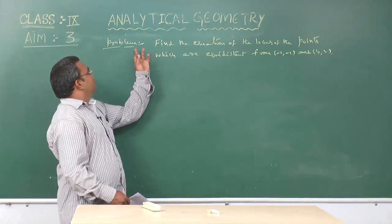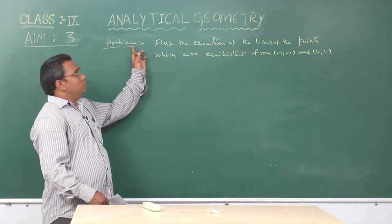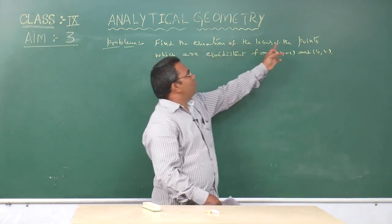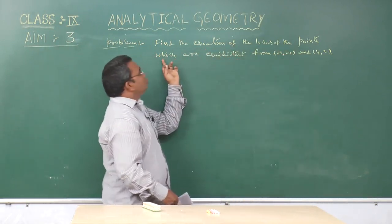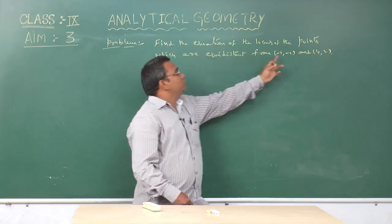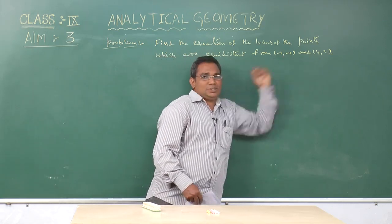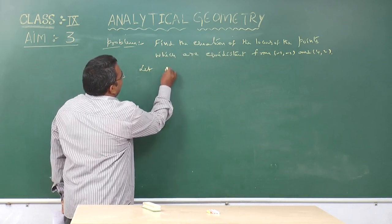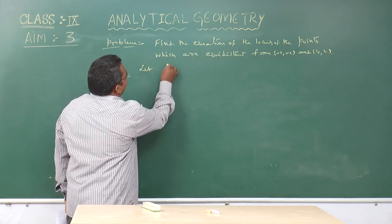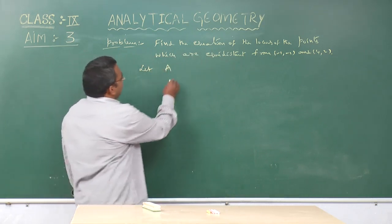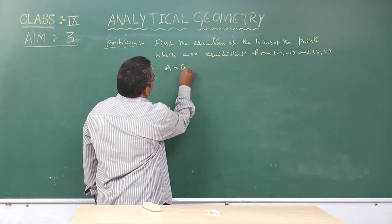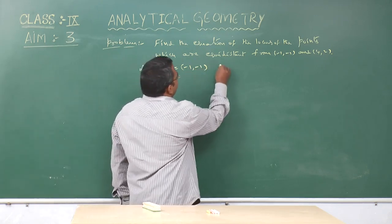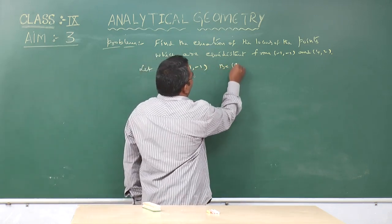We discuss the problem: find the equation of the locus of the points which are equidistant from two given points. Let capital A and capital B be the given points, that means A equals (-1, -1) and B equals (4, 2).